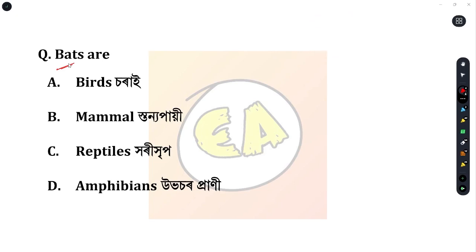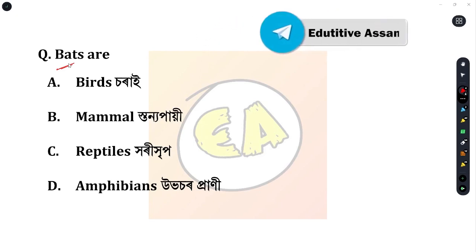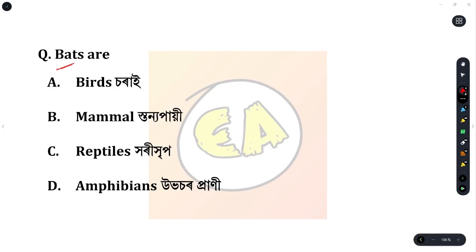This question is for DHSG Grade 3 exam preparation. Since the Grade 3 exam is mostly in English medium, it is important to practice reading questions and options in English. The correct answer is: bats are mammals.